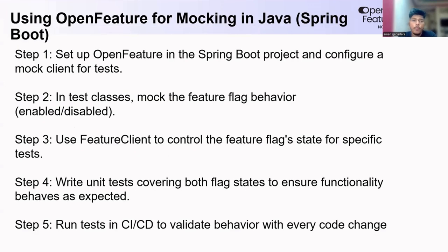Let's take an example of how Open Features can be used for unit testing in a Java Spring Boot application. In Java Spring Boot, for unit testing we use JUnit and Mockito. If you are using Open Features for unit testing in a Java Spring Boot application: step one, Open Features provides a Java SDK — add that SDK dependency in your pom.xml if you are using Maven. Step two, in the test class, mock the features using JUnit and Mockito with enabled and disabled states.